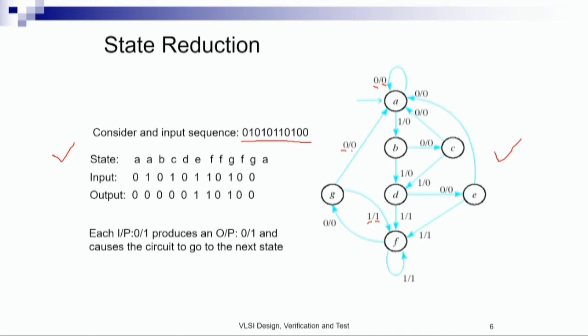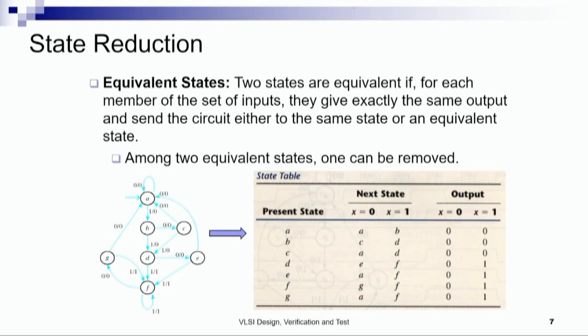The initial state is A. When we get input 0, we produce output 0 and go to next state A. If the current state is A and the input is 1, we produce output 0 and go to next state B. State reduction is done by finding equivalent states. Two states are equivalent if for each member of the set of inputs they give exactly the same output and send the circuit to the same state or an equivalent state.